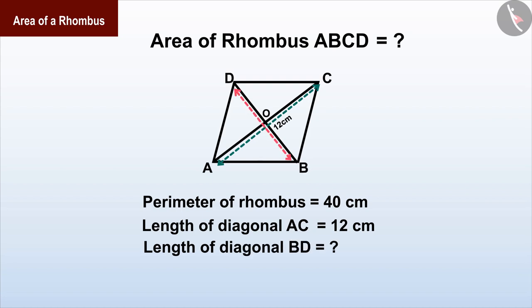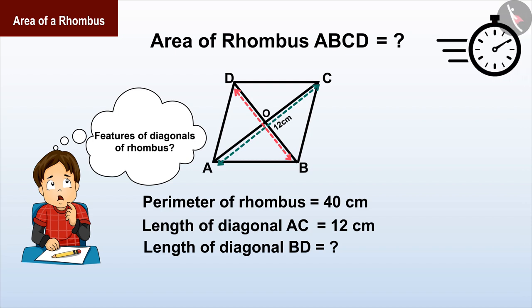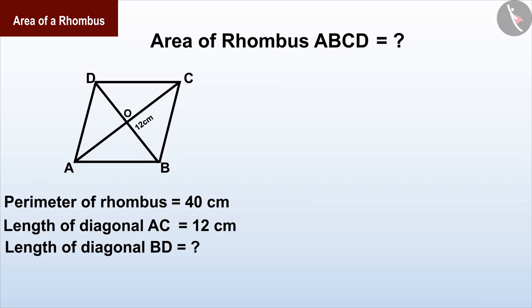In this case you can take help of the properties of diagonals of rhombus. In the rhombus, diagonals AC and BD perpendicularly bisect each other.